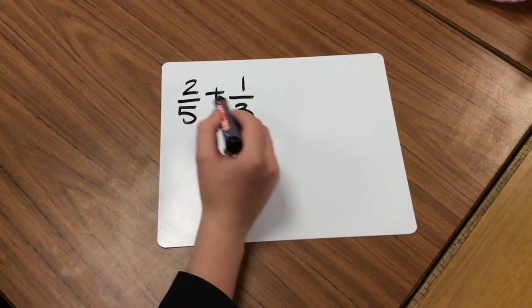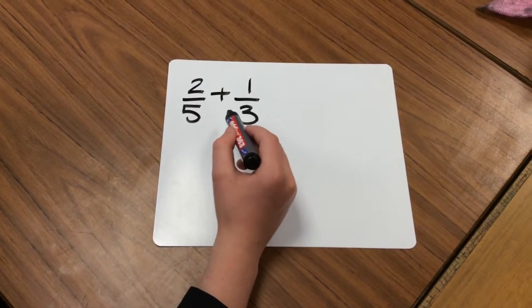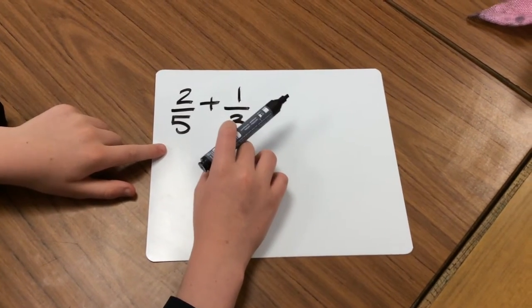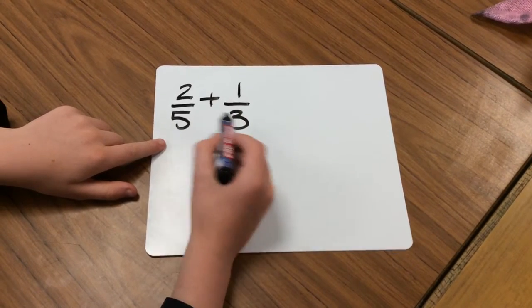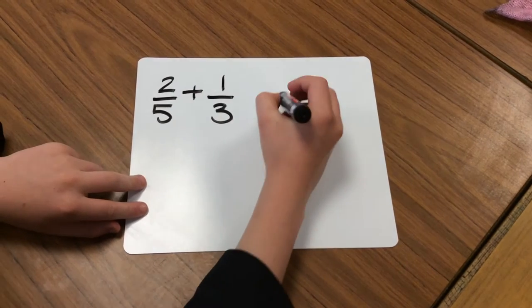I'm going to try and do two fifths add one third right now. Because the denominators aren't the same, we need to find a common denominator, which is a number that both five and three go into. We could use fifteen because five times three equals fifteen.